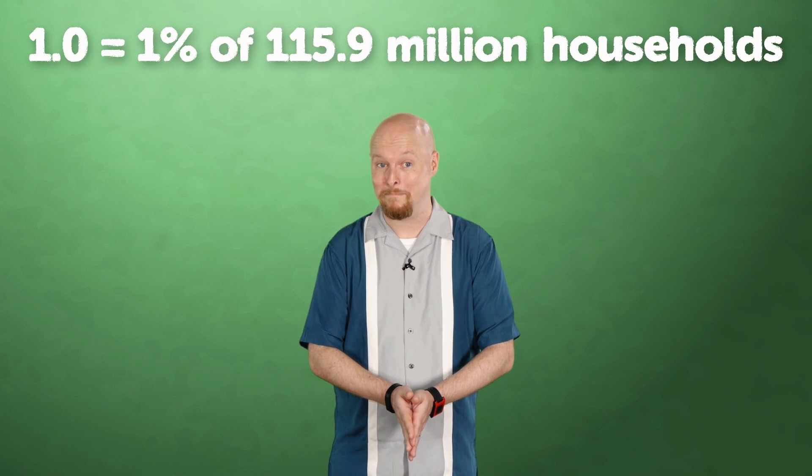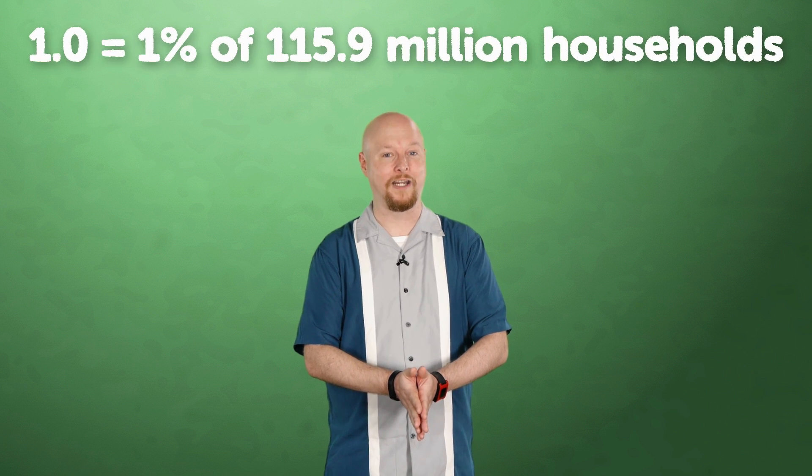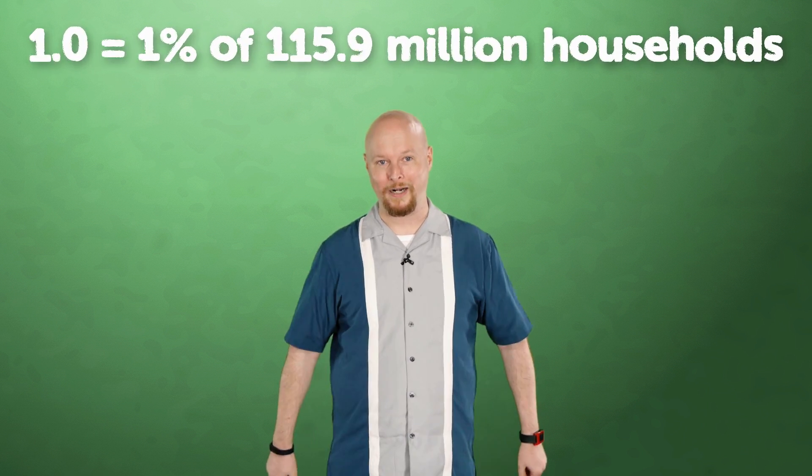So what do the ratings actually mean? The numbers we see in published ratings typically represent a share of total viewers. So for example, a 1.0 Nielsen rating indicates that 1% of the 115.9 million estimated TV watching households tuned into a program.